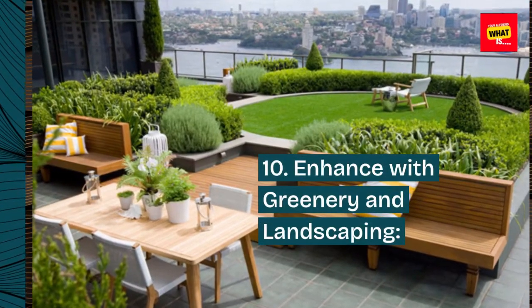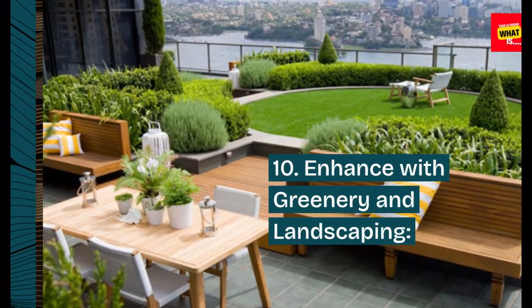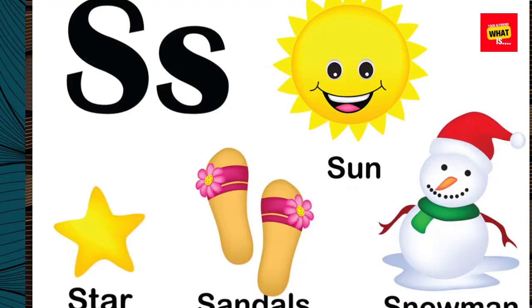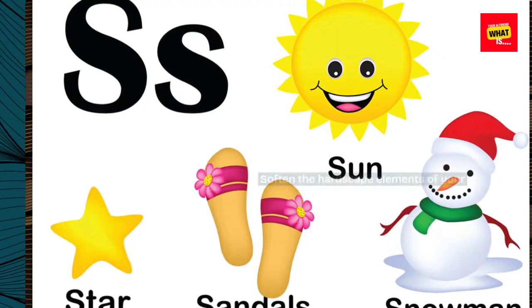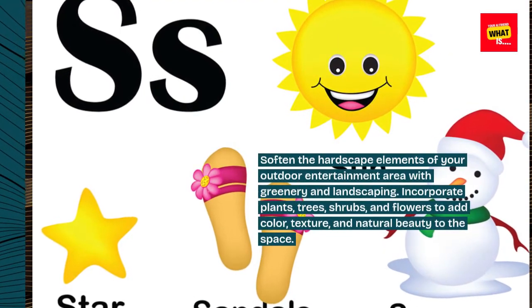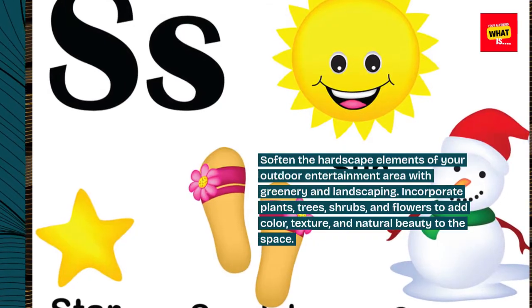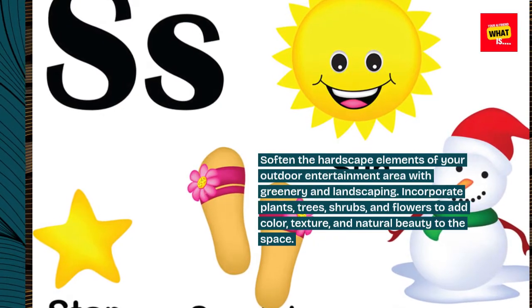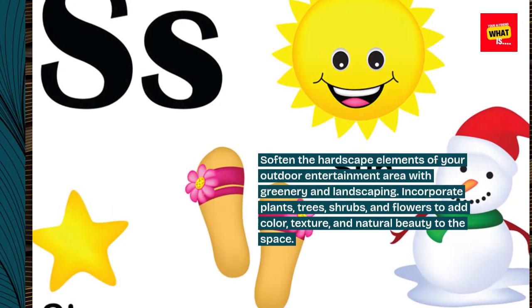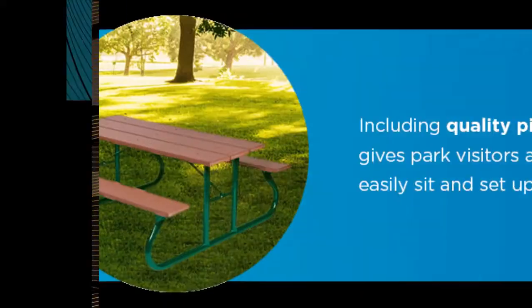10. Enhance with greenery and landscaping. Soften the hardscape elements of your outdoor entertainment area with greenery and landscaping. Incorporate plants, trees, shrubs, and flowers to add color, texture, and natural beauty to the space.